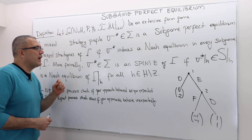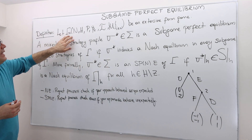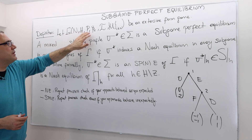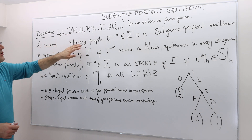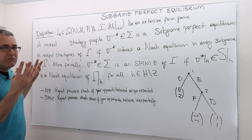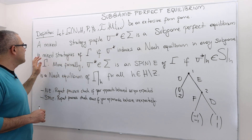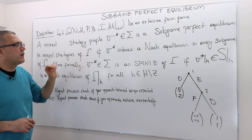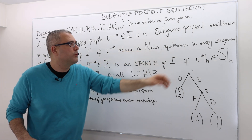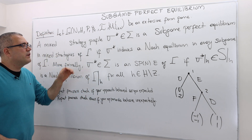So this is formally how we define it. Let's take any extensive form game with a set of players, histories, etc. A mixed strategy profile, Sigma Star, is a subgame perfect Nash equilibrium — or simply subgame perfect equilibrium — in mixed strategies of our game, if Sigma Star induces a Nash equilibrium in every subgame of this game.